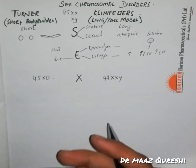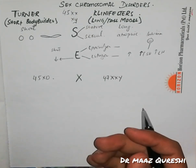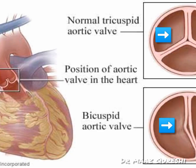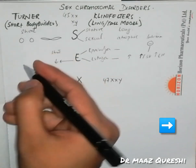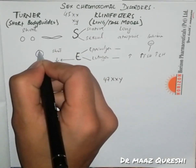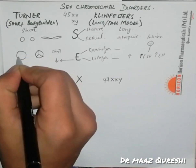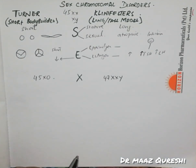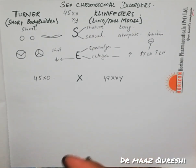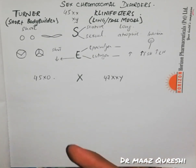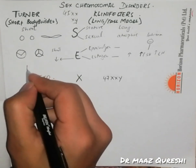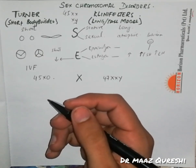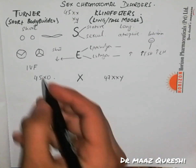In Turner's syndrome there is also a shield chest. In cardiology, there is a bicuspid aortic valve — normally the aortic valve has three cusps, but in Turner's it has two. Turner's patients cannot carry out a normal pregnancy and have to use in vitro fertilization. Additionally, the brachial pulse would be higher than the femoral pulse.